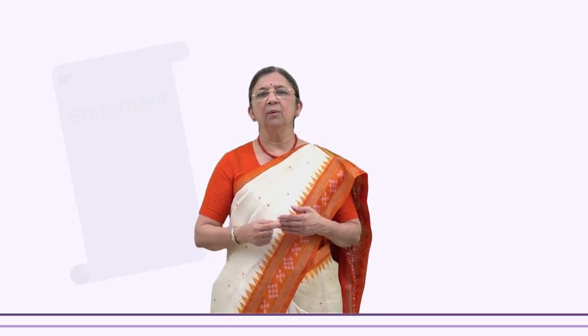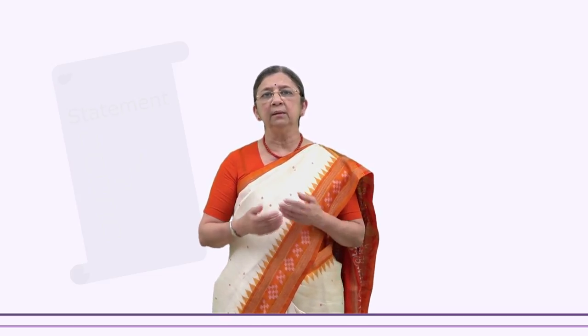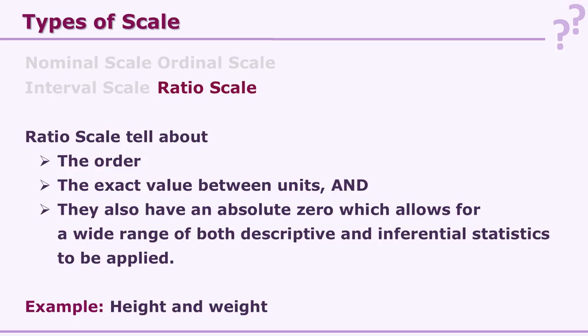What does 'no true zero' mean? Is there a situation when there is no temperature? Is there a situation where there is no height? No. So there is no true zero on the interval scale. Interval scales are better than the first two — nominal and ordinal — because we can use a lot of statistics with these scale scores.